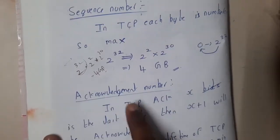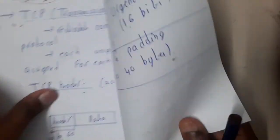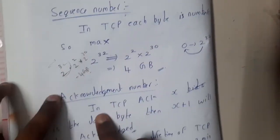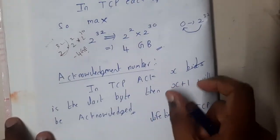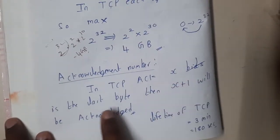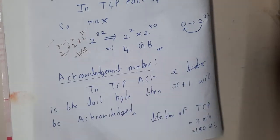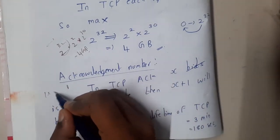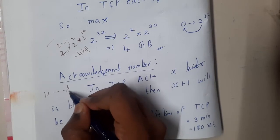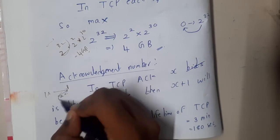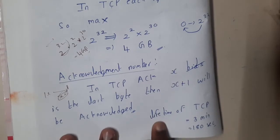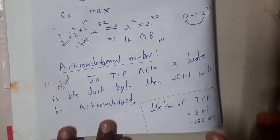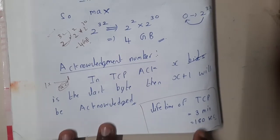The next slot is for the acknowledgement number. In TCP, if I send bit x to the receiver, once they receive that bit they will send back an acknowledgement of x + 1. Also, remember one important thing: the lifetime of a TCP segment or packet is 180 seconds, which is 3 minutes.